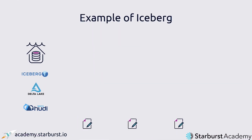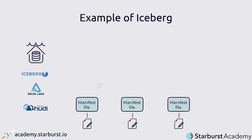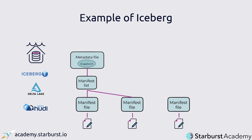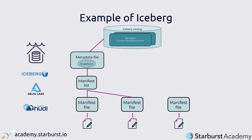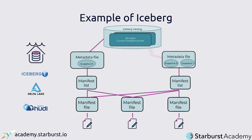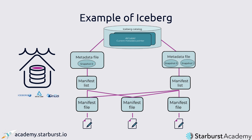In this example, data is held in the data layer in files. When a change is made, a manifest file is created that references a specific section of the data. Multiple manifest files are further referenced in a manifest list, which is contained in a metadata file. This data is then held in the Iceberg catalog. As changes are made to the lakehouse, those changes are tracked in the corresponding manifest files and transferred to the Iceberg catalog in real time. You can think of the metadata held in a lakehouse as a kind of database transaction log that sits on top of the traditional cloud object storage making up a data lake.